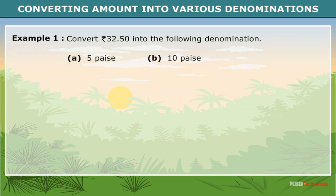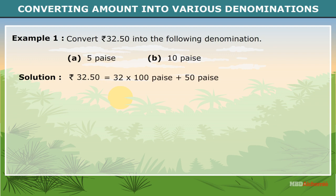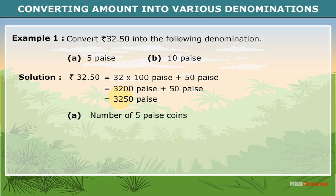Convert 32.50 rupees into the following denominations. 32.50 rupees is equal to 32 multiplied by 100 paise plus 50 paise, equal to 3200 paise plus 50 paise, which is equal to 3,250 paise.